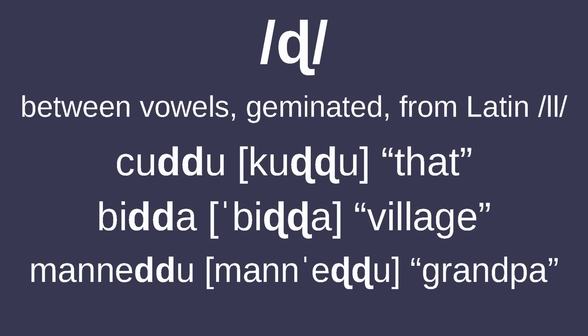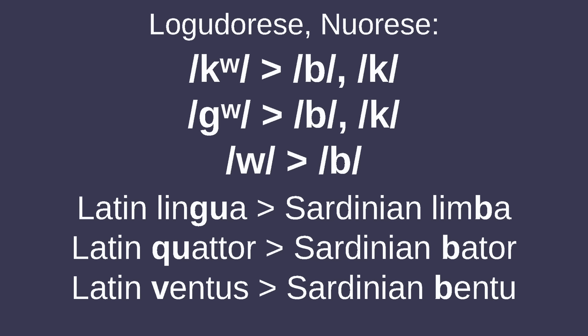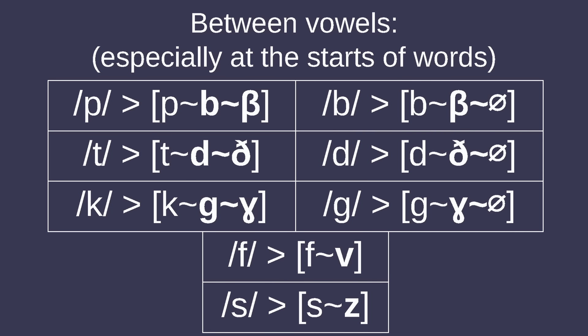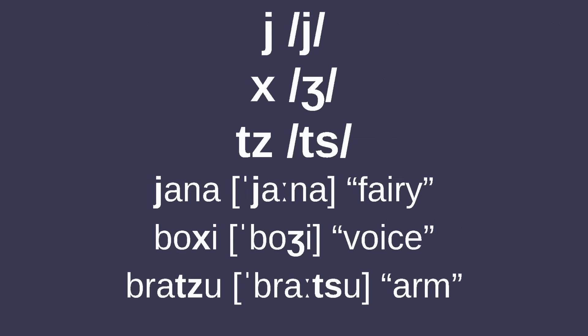As for standout consonants, there's retroflex /ɽ/, which appears geminated between vowels and came from Latin double L. Some dialects of Nuorese also have the voiceless dental fricative /θ/. Labiovelar stops /kw/ and /gw/ shifted to /k/ or /p/ in Logudorese and Nuorese, and /wa/ shifted to /ba/ in most dialects. Outside of Campidanese, there was no palatalization of /k/ and /g/ to other sounds before E and I, unlike in most Romance languages. Between vowels, voiceless plosives /p/, /t/, /k/ become voiced plosives /b/, /d/, /g/ or fricatives /v/, /ð/, /ɣ/, and phonemically voiced plosives can become fricatives or be dropped altogether. Fricatives /f/ and /s/ can also get voiced to /v/ and /z/ in these contexts.